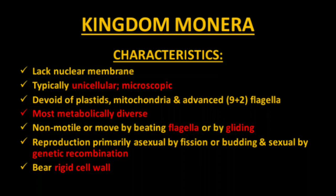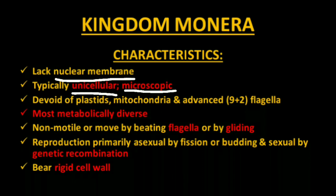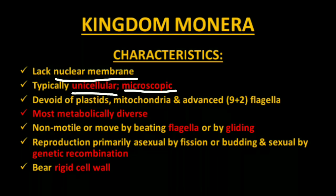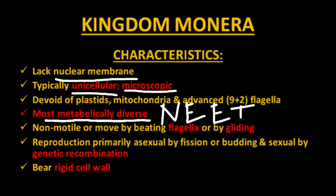First of all, they lack nuclear membrane because they are prokaryotes. Secondly, they are typically unicellular — made up of a single cell — and they are microscopic, because they are so small that it's not possible for anyone to observe them with unaided eyes. They are devoid of plastid, mitochondria, and the 9+2 flagellar arrangement. They are also the most metabolically diverse — a very important point for your NEET exam, mentioned in your NCERT book, and questions have been asked from it previously.